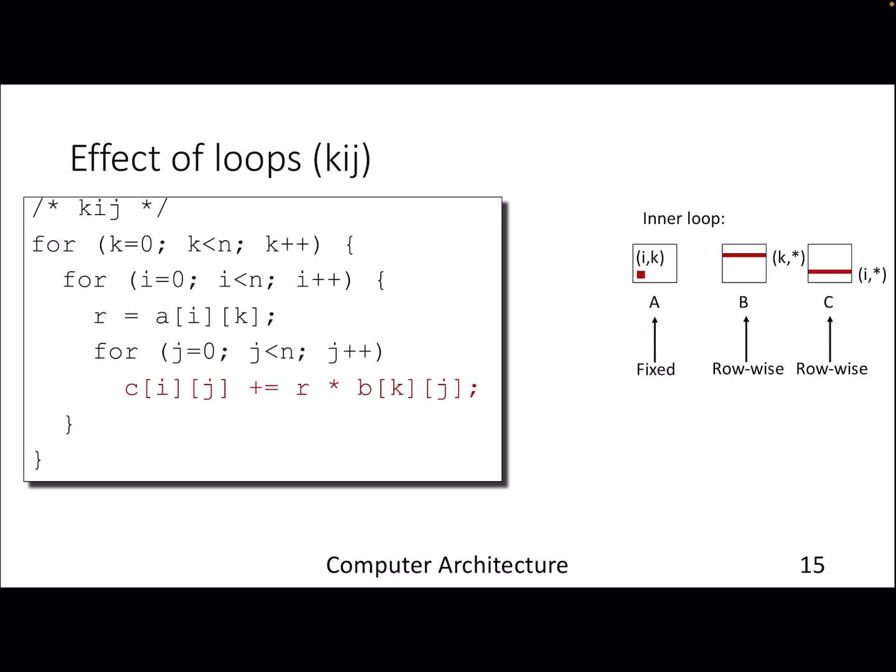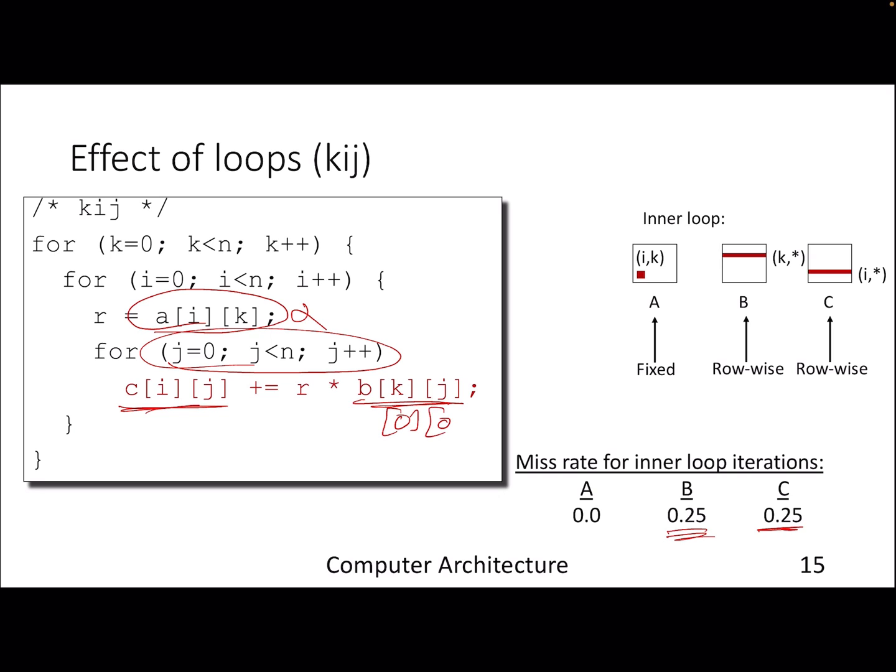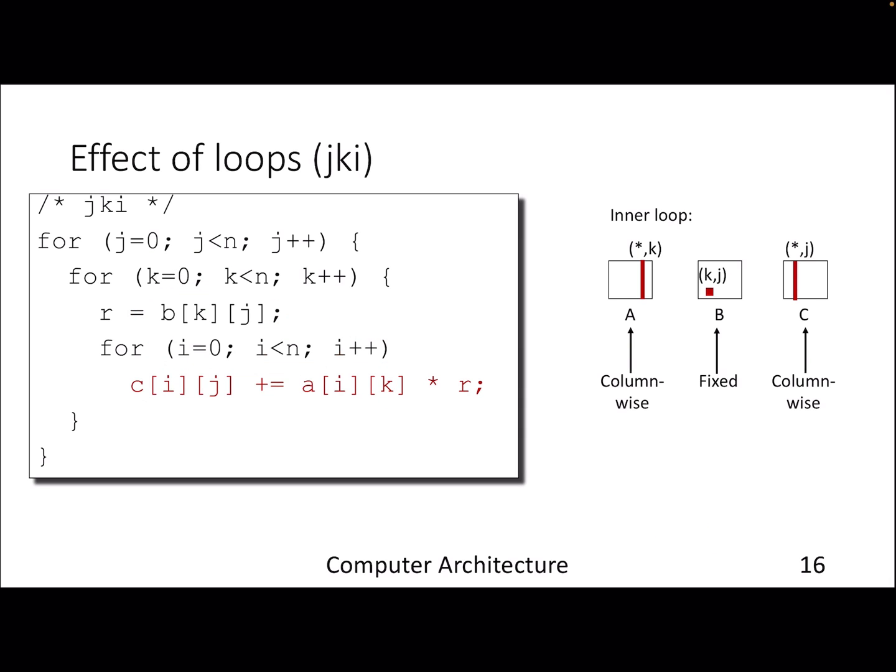Now if we just change the order a bit and rearrange our code, the functionality is still the same, but let's look at what happens now. We have moved our array a before the inner for loop, so it's unaffected. C[i][j] will get 25% miss rate again because it's exploiting locality. You bring one entry and get three entries for free. Similarly for b, because now b is also exploiting spatial locality. For a given value of k, it's iterating over j, so now it's going for b[0][0][0] and all. This particular change in loop iterations has actually improved miss rate.